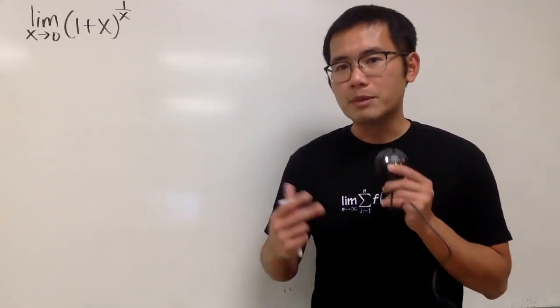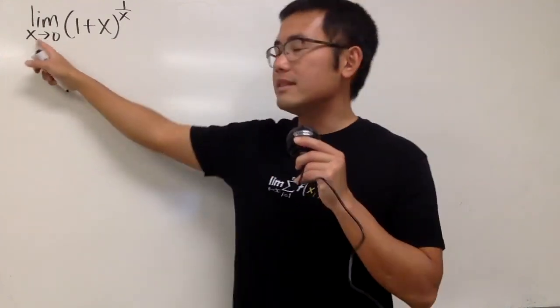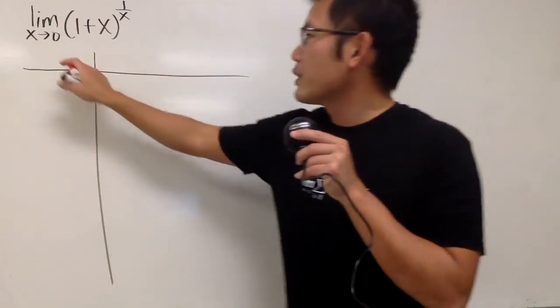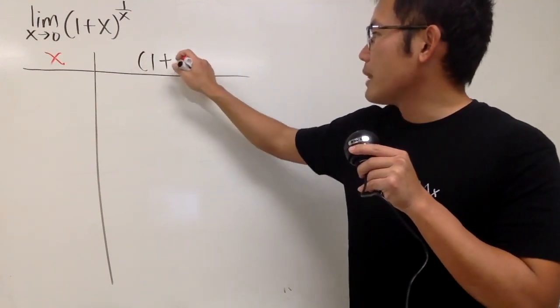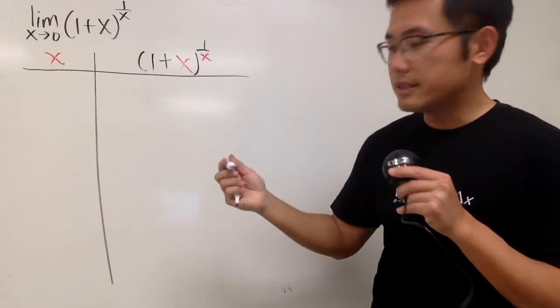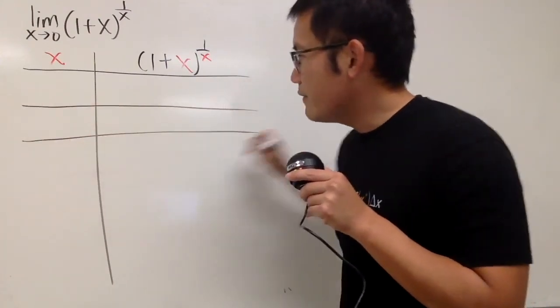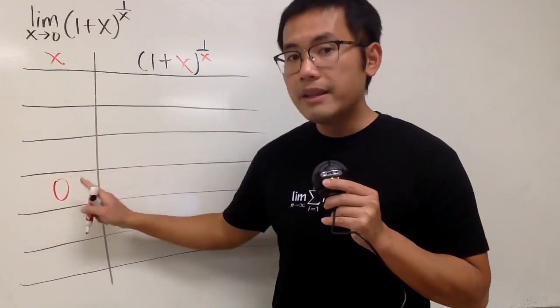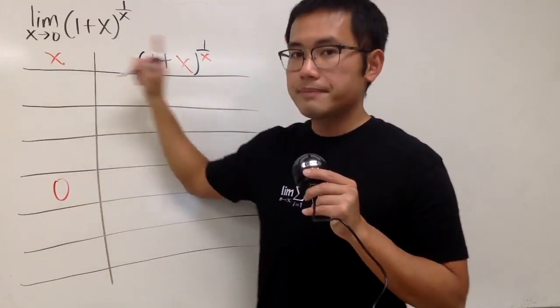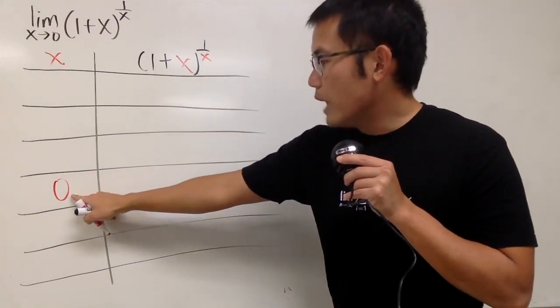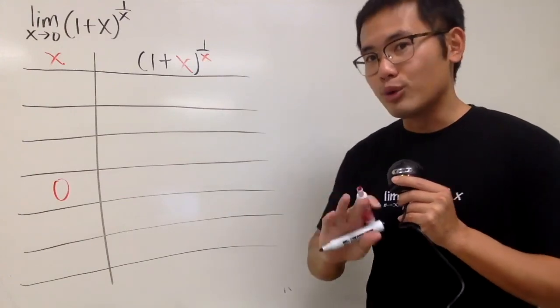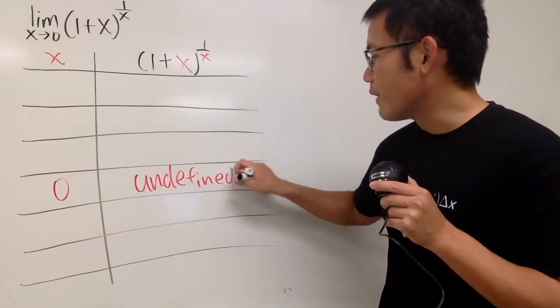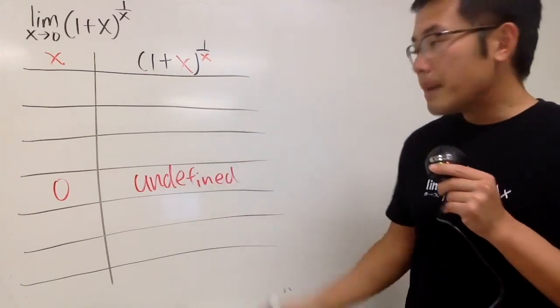Okay, for this question, we'll use a calculator, so we can come up with a table of values to find this limit right here. Notice that we have x is approaching 0. Let me just put on x right here, and then we have the expression 1 plus x raised to the 1 over x power. If I put 0, and this right here is exactly equal to 0, we have 1 over 0, and that's automatically undefined. So when x is exactly equal to 0, you do not have a value for this expression.